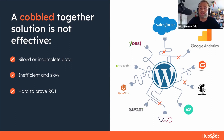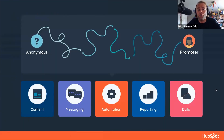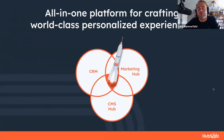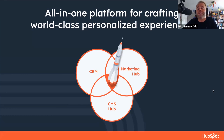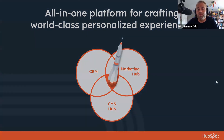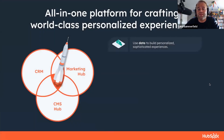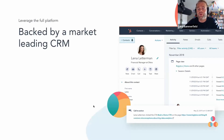It's also very inefficient — logging into all those different tools, cobbling together spreadsheets to show your boss — and it's hard to prove ROI. At HubSpot, we looked at this journey and pulled out five key elements we call primary colors: content, messaging, automation, reporting, and data. We crafted a world-class personalized experience platform: our CRM as the unified data source — whether you use HubSpot CRM or sync from Salesforce, you can use it almost like a CDP — and then Marketing Hub as the system of engagement and CMS Hub as the system of content.